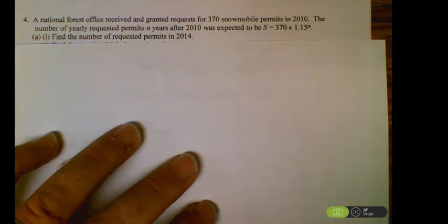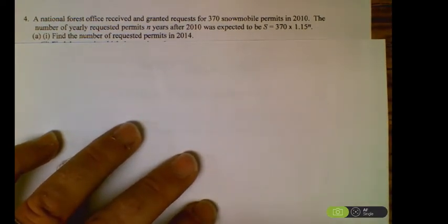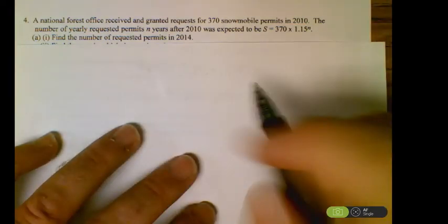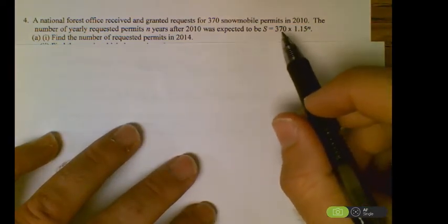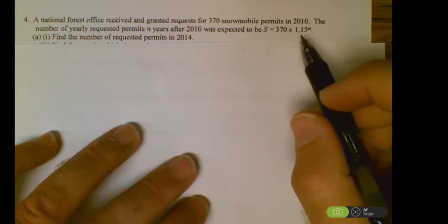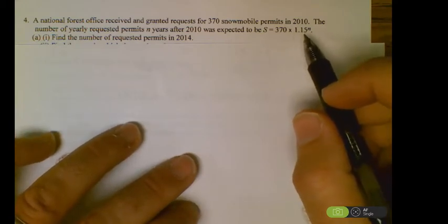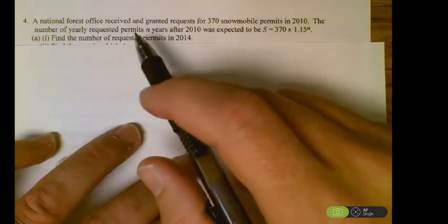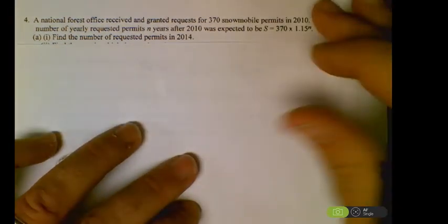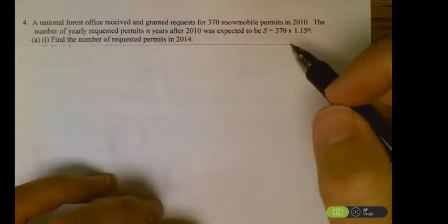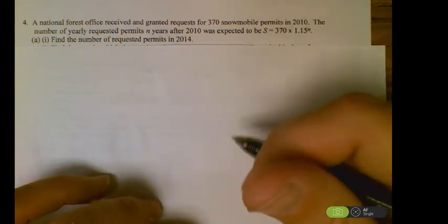Moving on to number four. National Forest received a request for 370 permits in 2010. A number of yearly requests and years after 2010 was expected to be this. They're giving us our function. That was the initial term, here is our growth rate. It's bigger than one, so we know it's going to go up. That's why we call it a growth rate because it was 1 plus 15%. We have our n represented by number of years after 2010. Find the number of permits requested in 2014. That would be four years after 2010. So that's going to be our exponent. For part i here, just sub in a 4 for n.